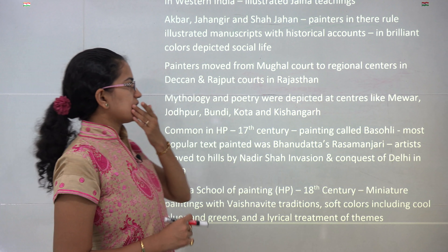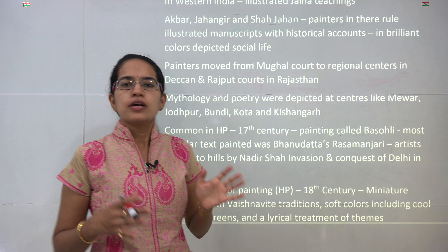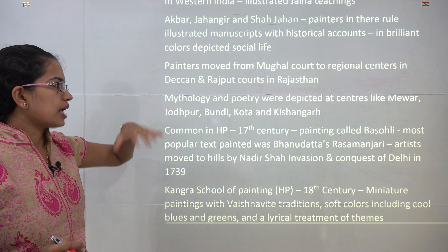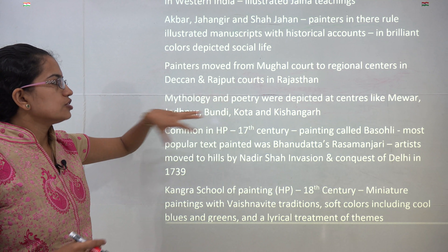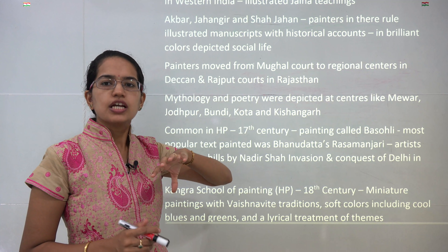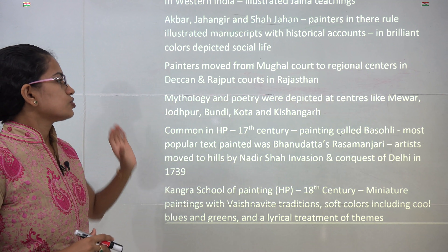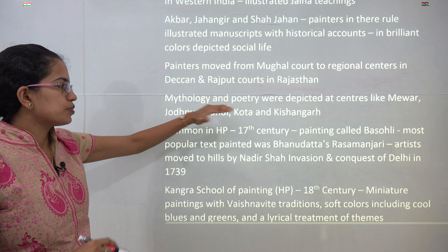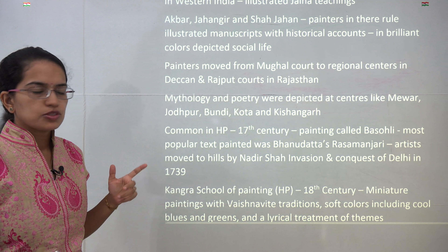Slowly and gradually, these painters moved from the Mughal court to the hilly areas or the Rajput areas of Rajasthan. The regional centers were shifting to the Deccan, Rajasthan and the hills. In Rajasthan, Mewar, Jodhpur, Bundi, Kota and Kishangarh developed their own forms of painting.